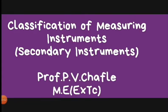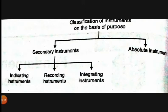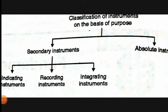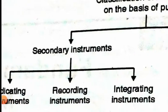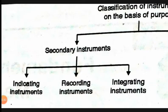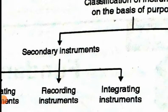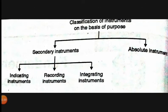Hello students. Today we see the next topic, that is the classification of measuring instruments. On the basis of purpose, there are two types: secondary instruments and absolute instruments. In secondary instruments, there are again three types: indicating instruments, recording instruments, and integrating instruments.